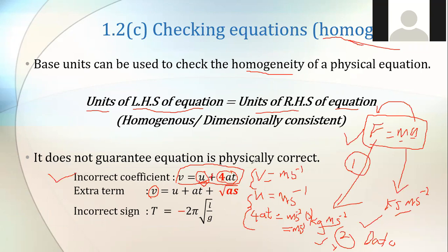But when we bring it to check the data physically, it does not guarantee that the equation is physically correct. That means when you use this equation to calculate movement, this equation is wrong — but is it homogeneous? Yes, it's homogeneous.